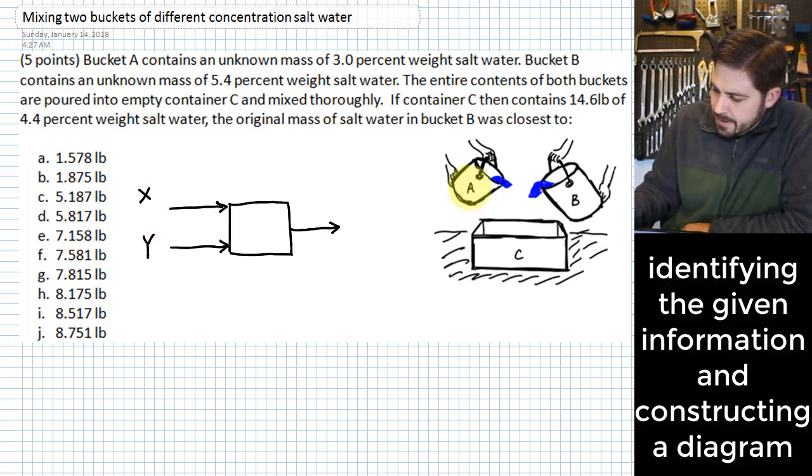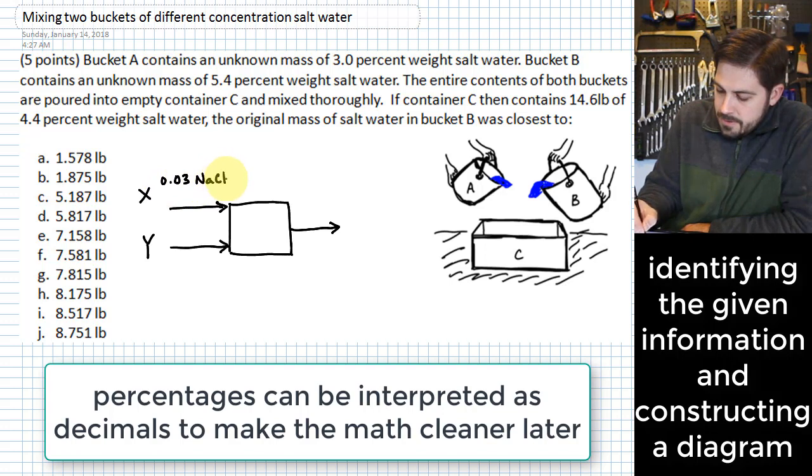Again we don't know what those are so we're just going to label them as x and y. And let's look at bucket A there where we're labeling that x. Bucket A is three percent weight salt.